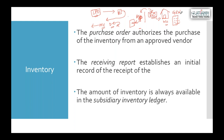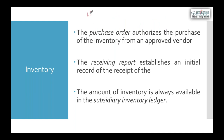The receiving clerk in the warehouse receives the goods and prepares a Goods Receipt Note (GRN), describing the goods received and their condition. This is important because sometimes goods received may differ from the delivery order - they may be expired, broken, or in poor condition. All such discrepancies must be clearly mentioned in the GRN.